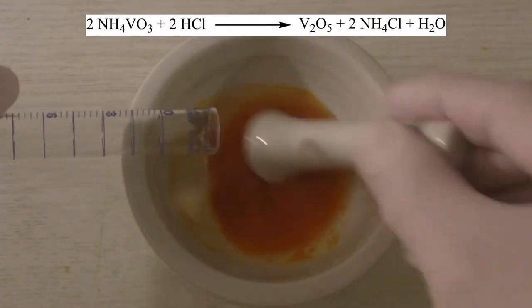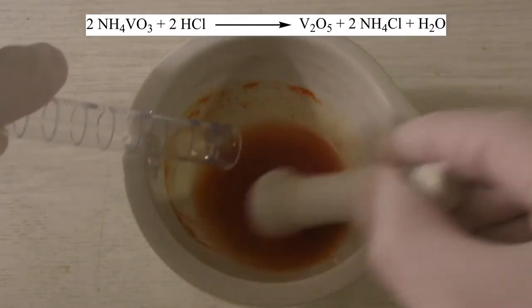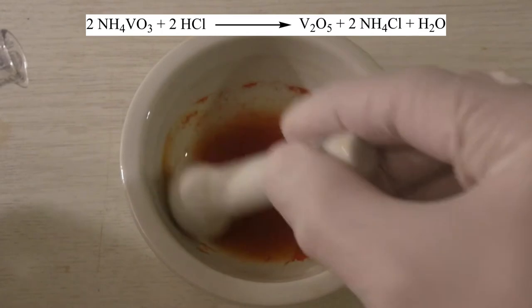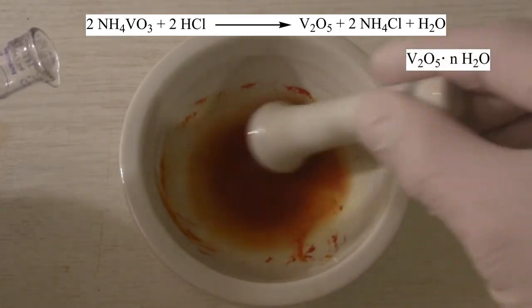The ammonium metavanadate reacts with the hydrochloric acid to form vanadium pentoxide and ammonium chloride, where the pentoxide, in reality, is a hydrated form.